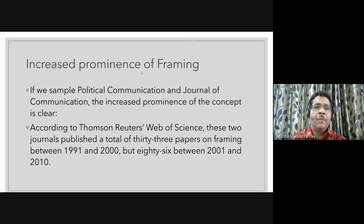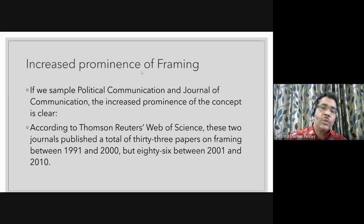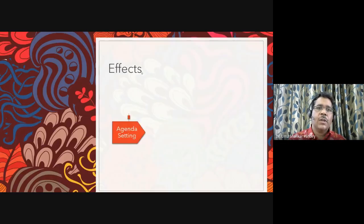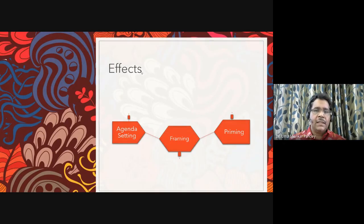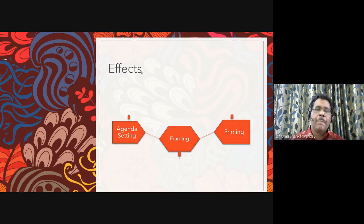According to Thomson Reuters Web of Science, the two most important journals in communication — Political Communication and the Journal of Communication — published a total of 33 papers on framing between 1990 and 2000. From 2001 to 2010, they had about 86 papers. So there is a lot of emphasis on news framing. We will study three different terms — framing, agenda setting, and priming — which at times are regarded as belonging to the same family, though they have vital differences.